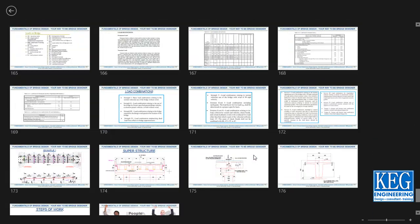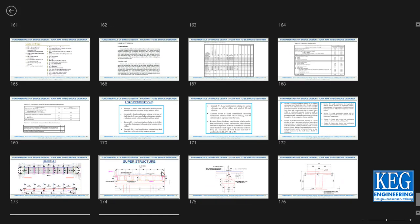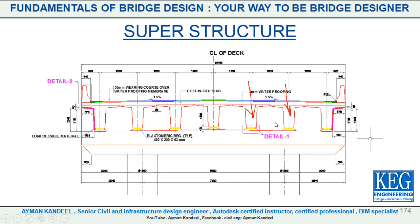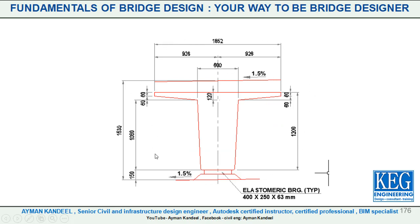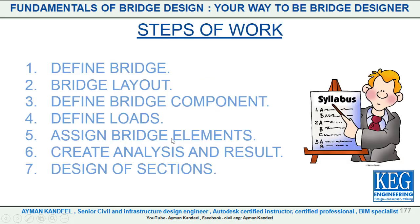Here is our superstructure with seven girders, the column head, the pier, and the elastomeric bearings. We have two circular columns with a diameter of 1.5 meters. The column head has a depth of 1.2 meters and a width of 2 meters. The column diameter is 1.5 meters. We are going to define the proposed section for the T-girder and the bearing location. The bearing location is 1.5 meters, and the girder section dimension is 2.15 meters. Let's start our steps of work.